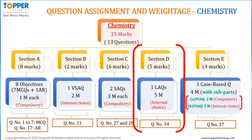In Section D, 5 marks are allotted to chemistry, wherein you will be asked one long answer type question with internal choice. That means there will be 2 questions, out of which you need to answer any one. Question number 34 is the chemistry question with internal choice in Section D.